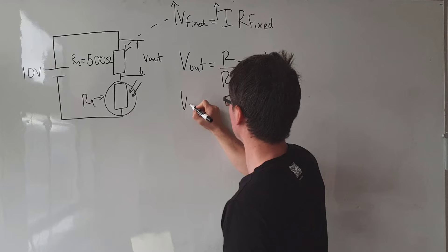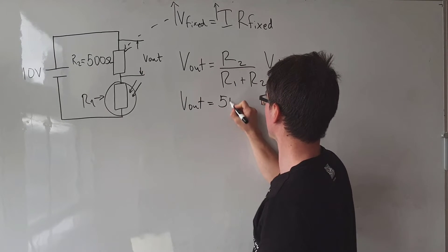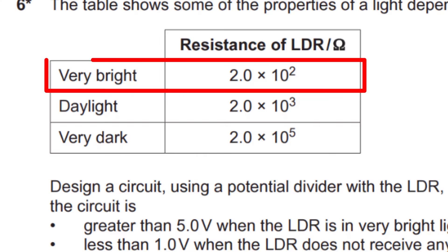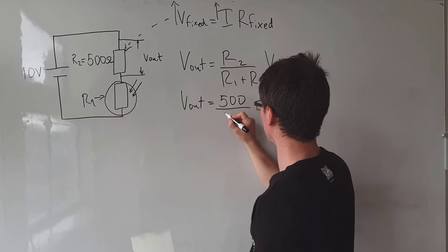Let's plug in some numbers. V_out will be equal to R2, which is 500, divided by R1. In very bright light, the resistance of the LDR is 2×10² which is 200.